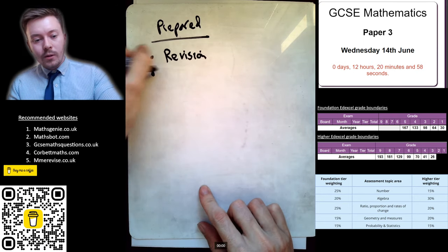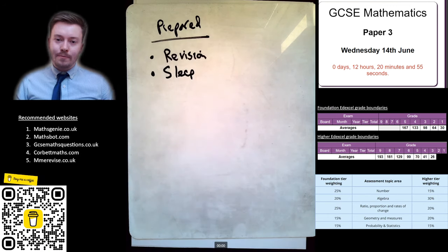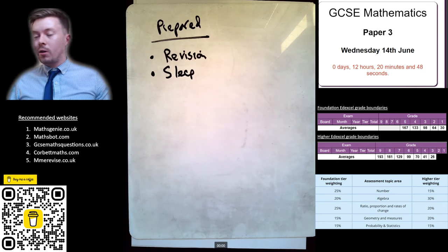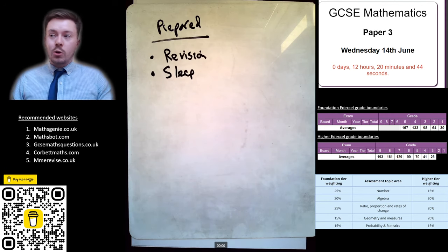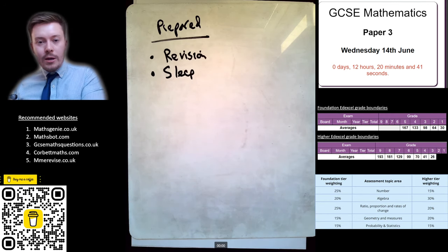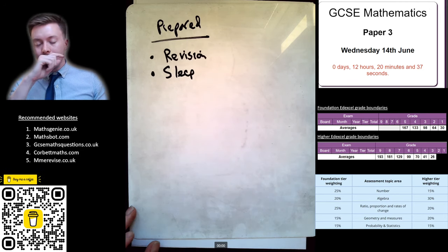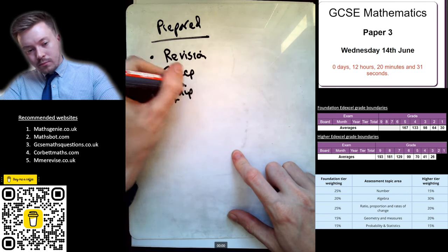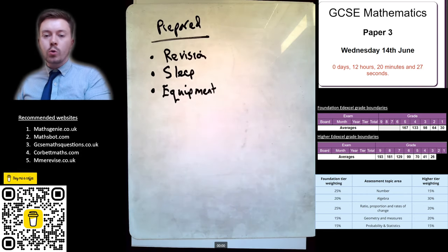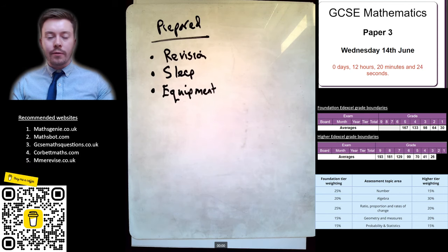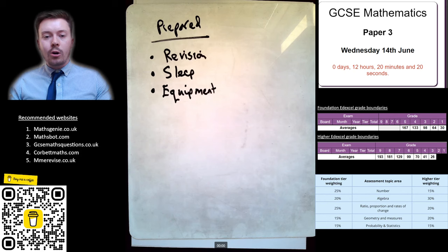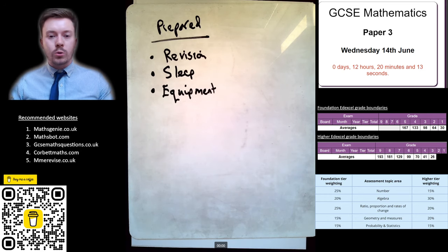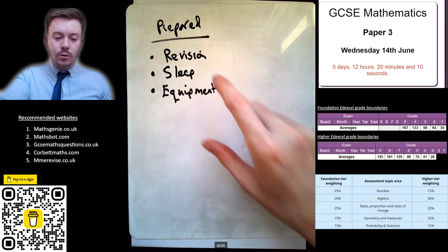The next thing: get enough sleep in the evening. Don't stay up until midnight or later if you can help it. Try to get in bed early enough so you wake up having had a good amount of sleep. After that: equipment. You need all your equipment sorted. You don't want to be rushing around tomorrow looking for a protractor, compass, ruler, or calculator. Have it all there, ready, with you, sorted.